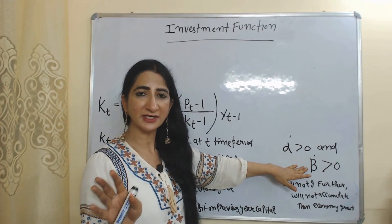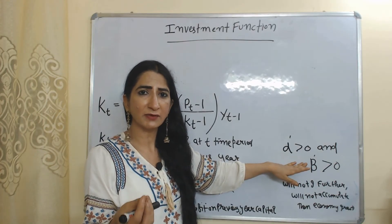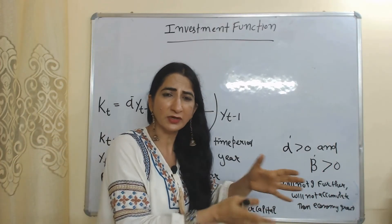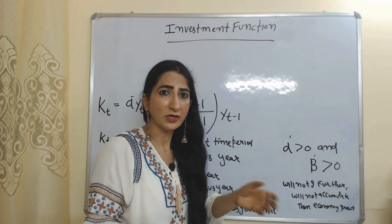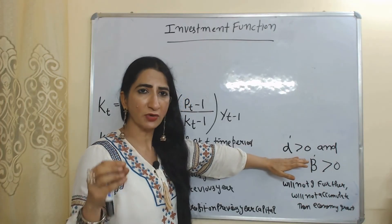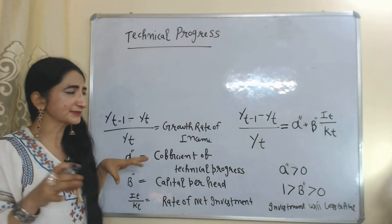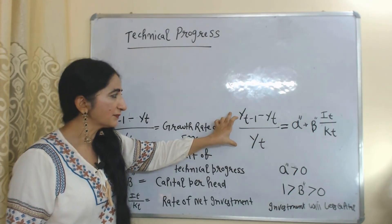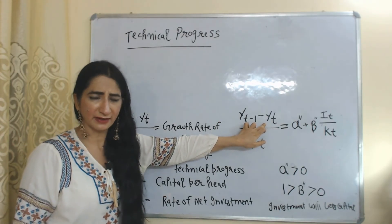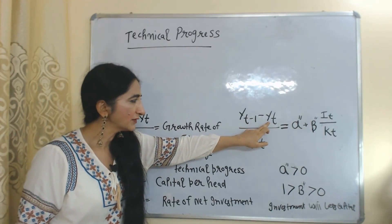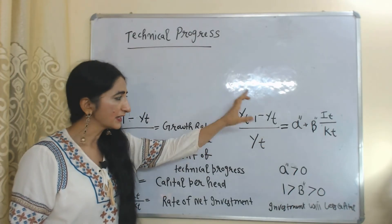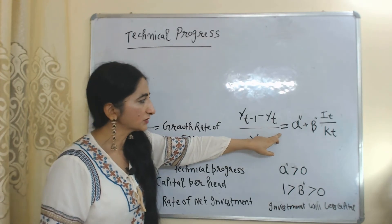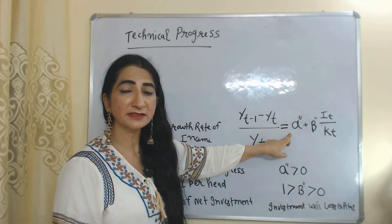If alpha-dash and beta-dash are both equal to zero, that means the previous year's output and rate of profit on the previous year's capital are both zero — so we will not accumulate more capital, not invest more, and our economy will not grow. When we subtract the previous year's income from current year's income and divide by current income, it gives us the growth rate of income. The growth rate of income is equal to alpha double-dash, which is the technical progress coefficient.